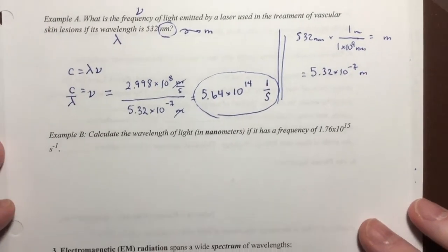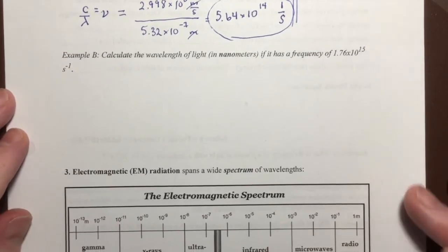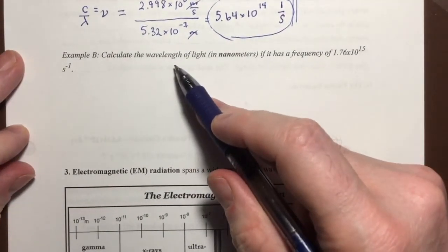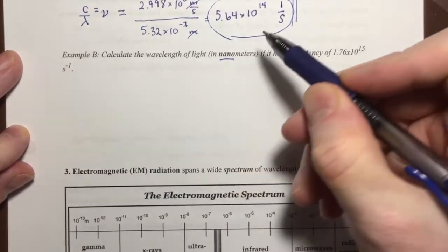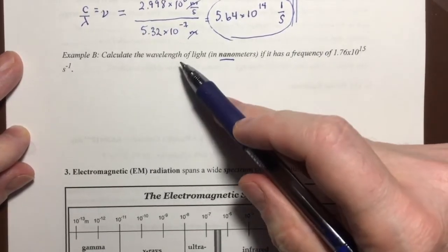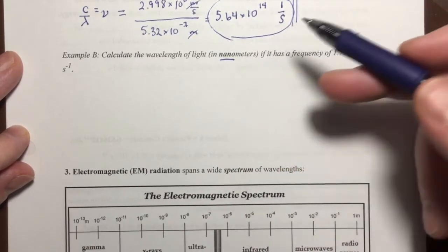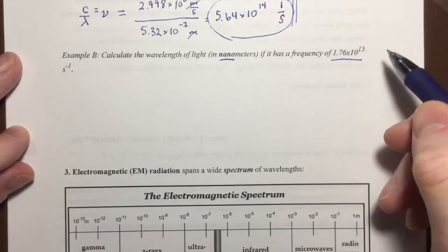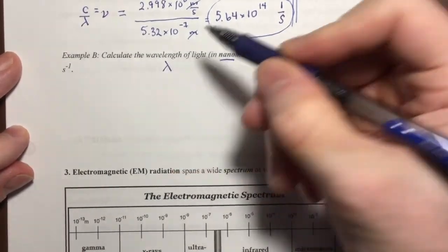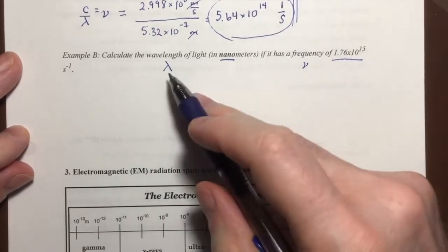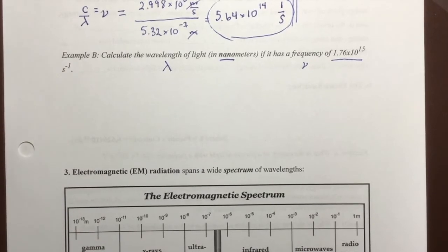Now there's one more sample problem, and it's basically working backward from what we just did. We're asked to calculate the wavelength — lambda — of light in nanometers, given a frequency. So once you do your calculation to determine wavelength, you'll have to do a final conversion to nanometers. Give that one a shot, and then resume the video.